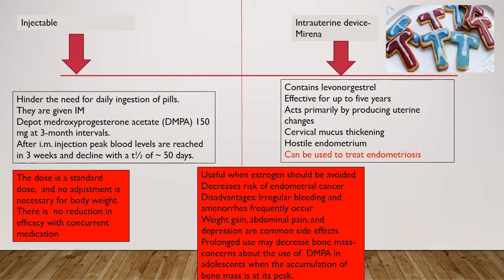The injectable contraceptive removes the need for daily pills. Given IM as depot medroxyprogesterone acetate 150 mg at 3-monthly intervals, peak blood levels are reached in 3 weeks and decline with a half-life of 50 days. The dose is standard and no adjustment is necessary for body weight, and there is no reduction in efficacy with concurrent medication.